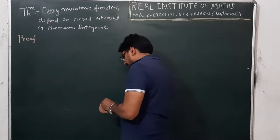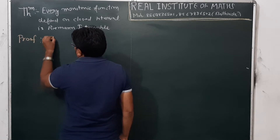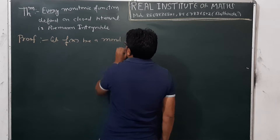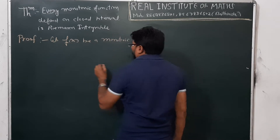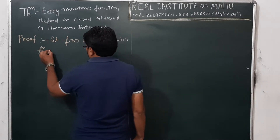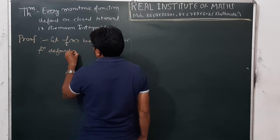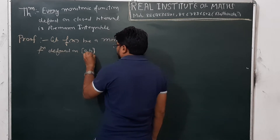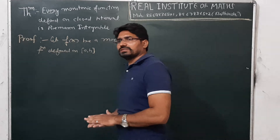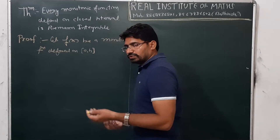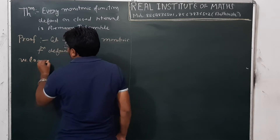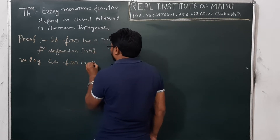The proof is very simple, so please concentrate. Let f(x) be a monotonic function defined on the closed interval. Without loss of generality, let f be monotonically increasing.